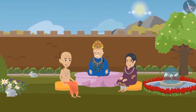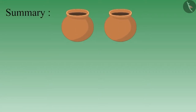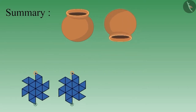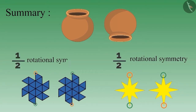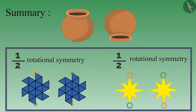You too try to find the answer — we will share it in the next video. In this video, we learned about objects and images which change when rotated by half, and also saw examples which do not change. Images that look the same when rotated by half have half rotational symmetry — that is, 1/2 rotational symmetry. Try to rotate such objects around you and observe. Thank you!